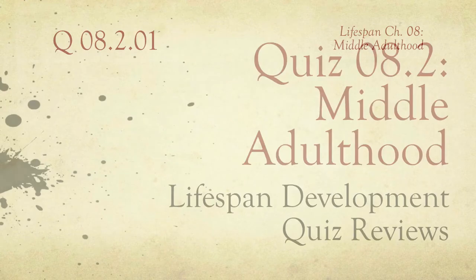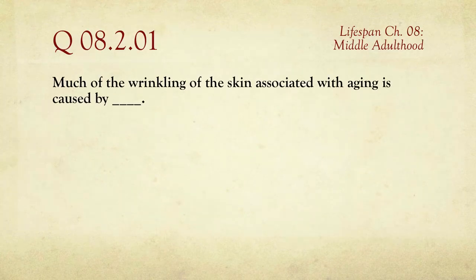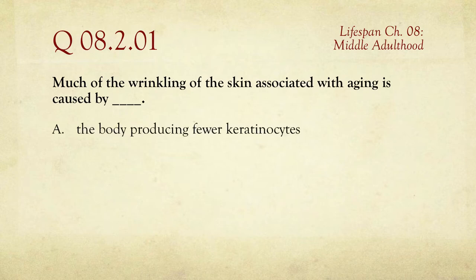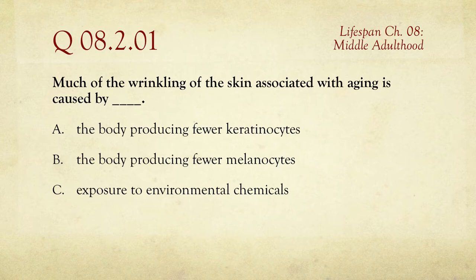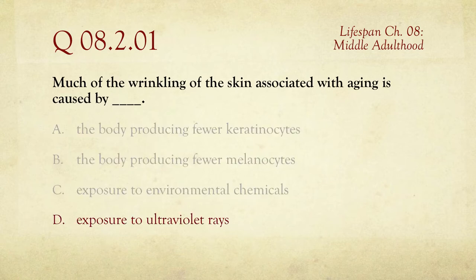The first question in the quiz is: much of the wrinkling of the skin associated with aging is caused by what? The body producing fewer keratinocytes, the body producing fewer melanocytes, exposure to environmental chemicals, or exposure to ultraviolet rays. According to our book, much of the wrinkling is associated with UV — exposure to ultraviolet rays.